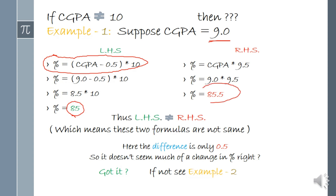And 85.5 on the right hand side. So you can see a difference of 0.5 between both sides, which proves that the left hand side result is not equal to the right hand side. You may think that 0.5 may not affect your percentage significantly, but the right hand side is not the correct one.